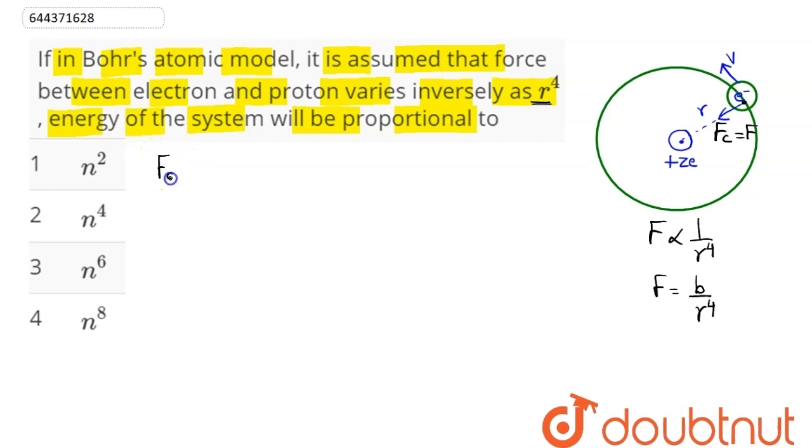So we can see here that the centripetal force is provided by this force. Centripetal force as we know is equal to mv square by r, is equal to this force here given as b divided by r power 4. So we have the relation as mv square is equal to b divided by r power 3.